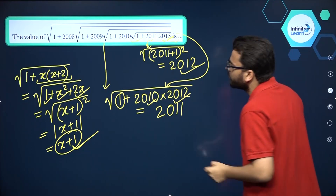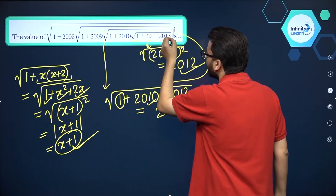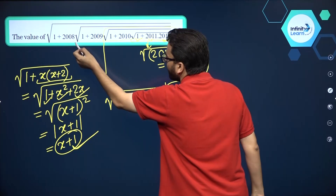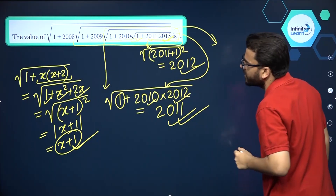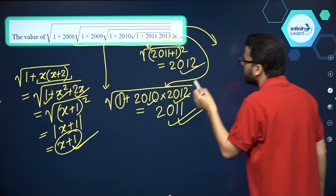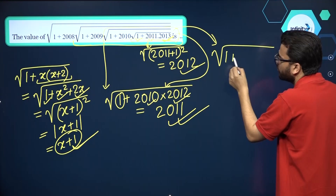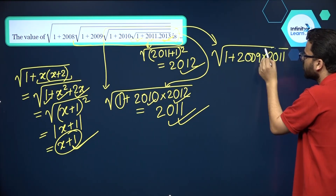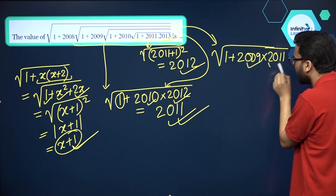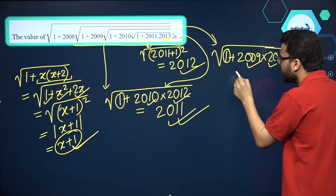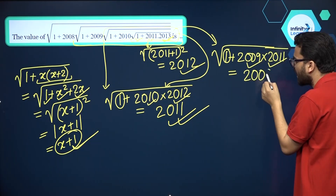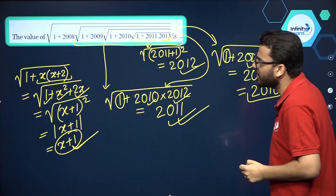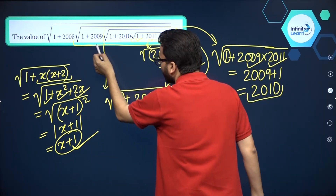I hope that is clear. So basically, up till this square root you are getting 2011. Now taking the next square root, we simplify the next layer: 1 plus 2009 and then 2011. Again it is of the form X into X plus 2 with plus 1 inside the square root, so it must give you X plus 1. So 2009 plus 1 gives you 2010. This is coming out to be 2010 up till this square root.